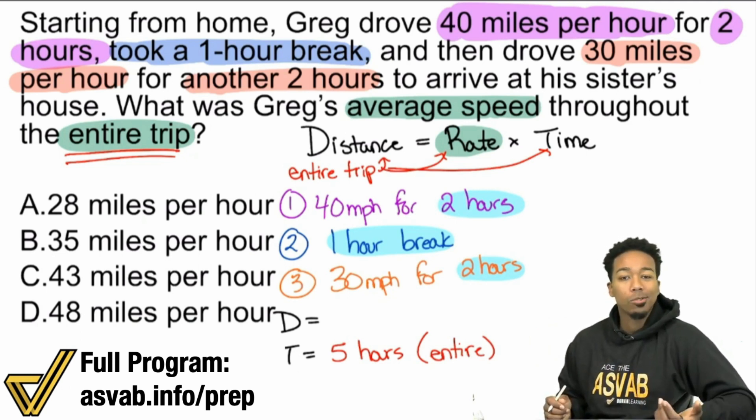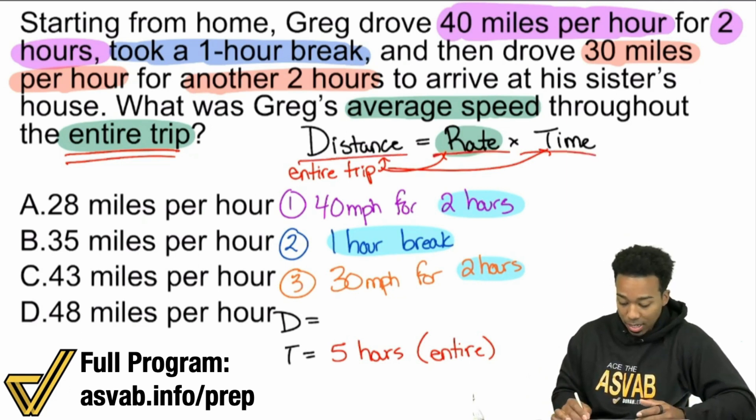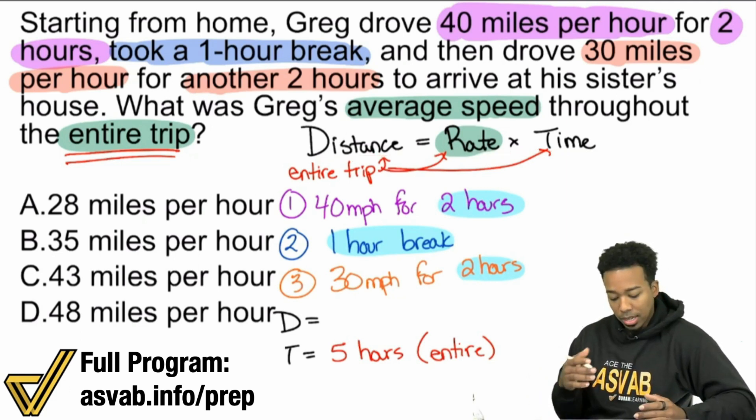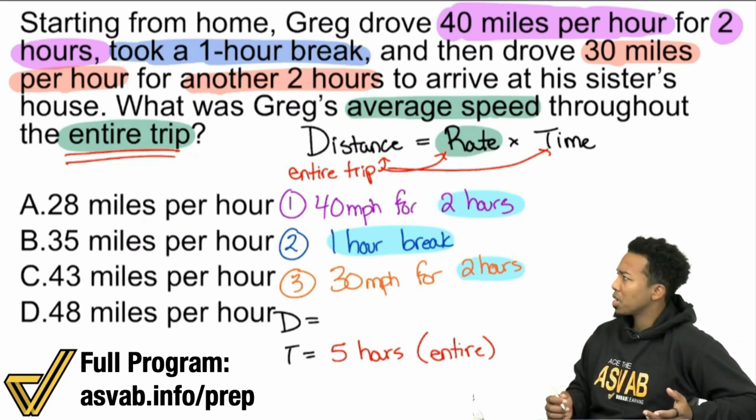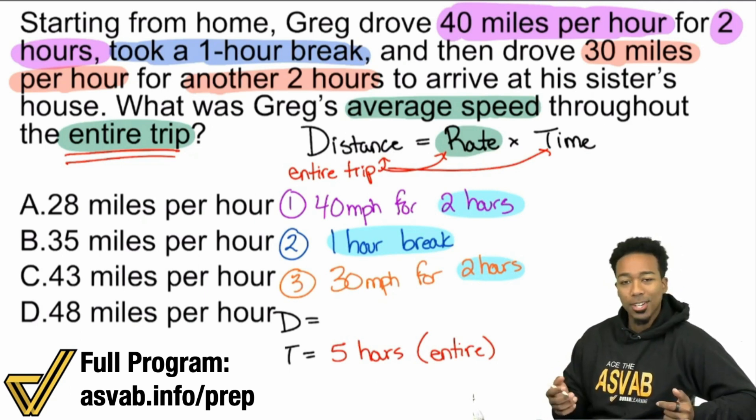What about the distance for the whole trip? Because again, we can't plug it in unless we are representing the same thing. Well, doesn't the formula read distance equals rate times time? Yeah, it does. So what are we going to do?